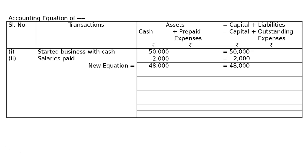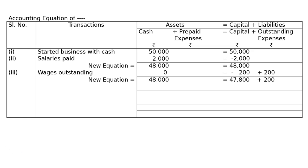Third transaction: wages outstanding rupees 200. It is an expenditure and has not been paid, so it will be recorded on the liability side. There is no change in cash. Since it is an expenditure, our capital will be reduced and our outstanding expenses — outstanding wages — will increase by 200. The new equation will be 48,000 equals rupees 47,800 plus 200.